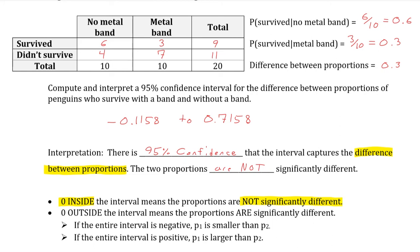If 0 is outside of the interval, which means that both your bounds for the interval are either both negative or both positive, then that means the proportions are significantly different. If the entire interval is negative, so a negative bound up to another negative bound, that means p1 is smaller than p2, and if the entire interval is positive, p1 is larger than p2.